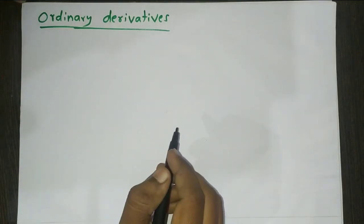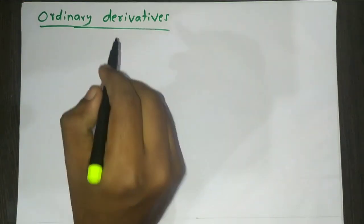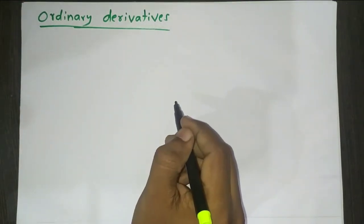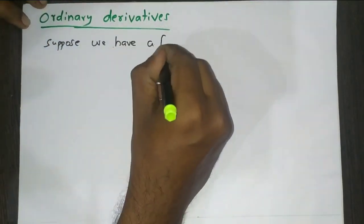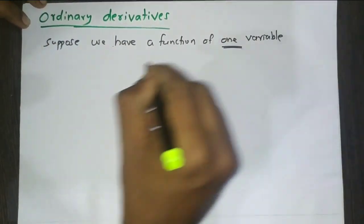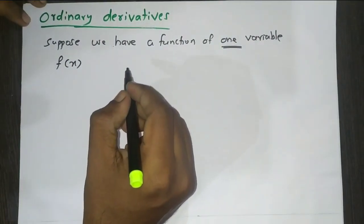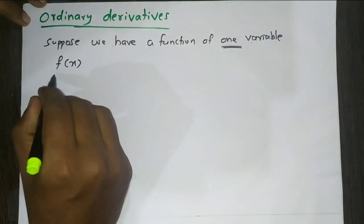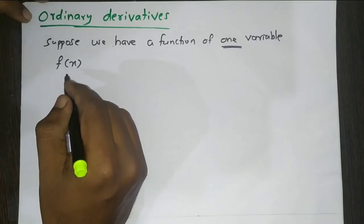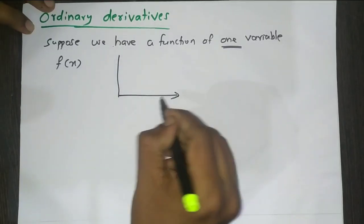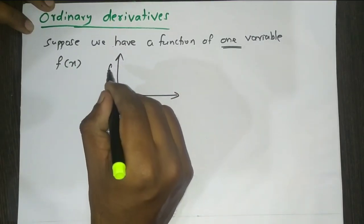Dear students, today we start our discussion on ordinary derivatives. Suppose we have a function of one variable. Let us say that function is f of x — the function f that depends upon only one variable x. On the x-axis we have x, and on the y-axis we have f.